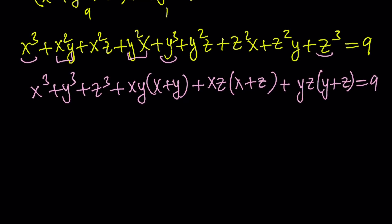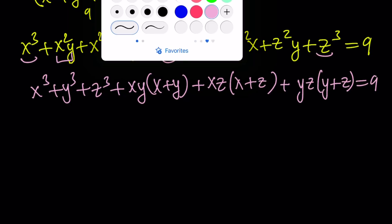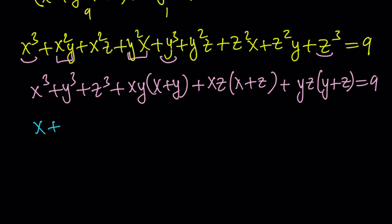Now, I don't have anything for the pairwise sums like x plus y or x plus z, but I have x plus y plus z. But I can use it. x plus y plus z is equal to 1. So from here, we can replace x plus y with 1 minus z, x plus z with 1 minus y, and y plus z with 1 minus x.